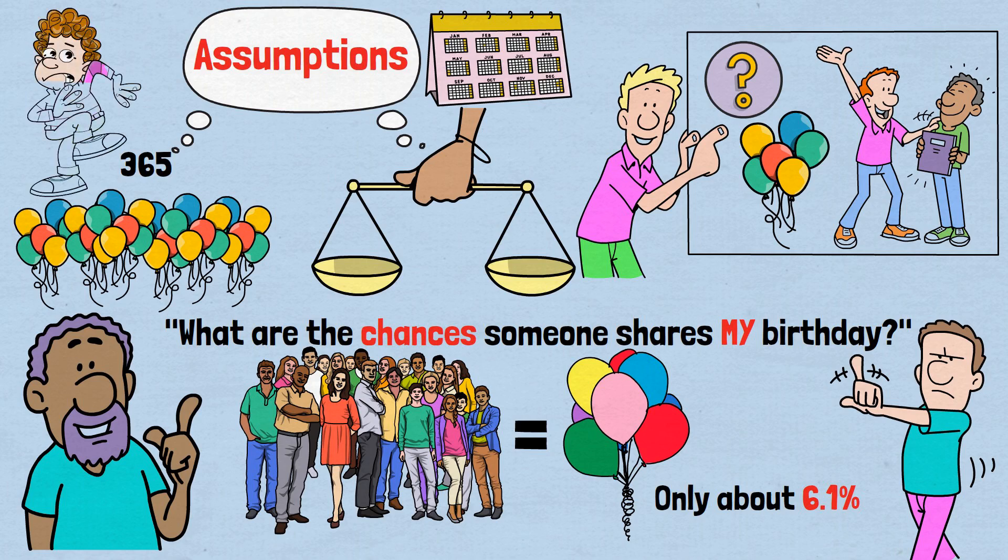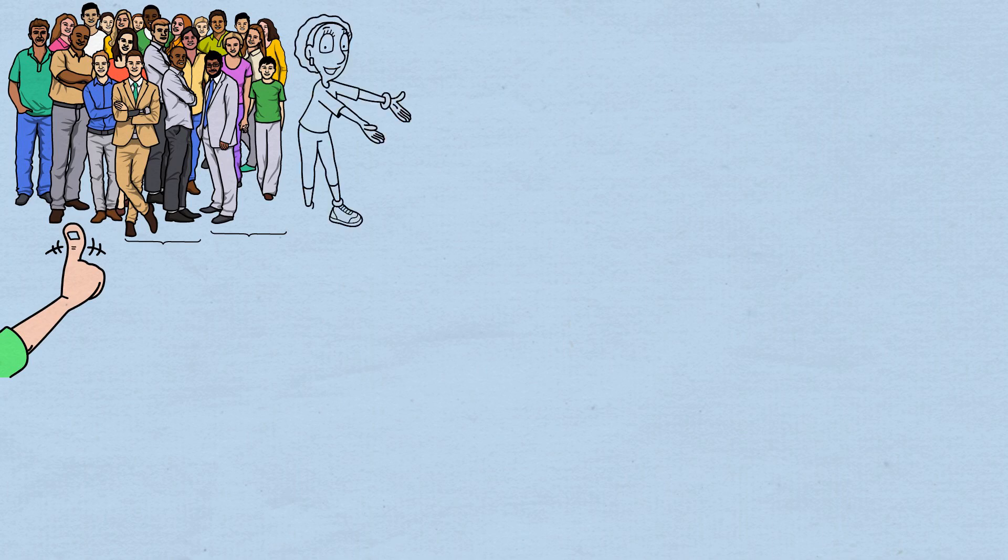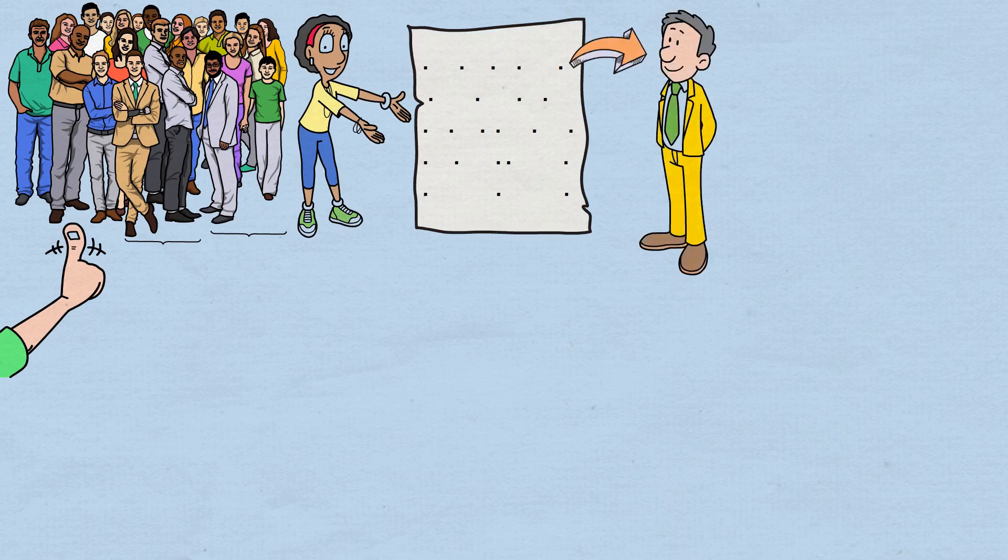Here's where our intuition crumbles. When we have 23 people in a room, we're not just making 23 comparisons, we're looking at every possible pair of people. Let me help you visualize this. Picture 23 dots scattered on a page, each representing a person in our room.